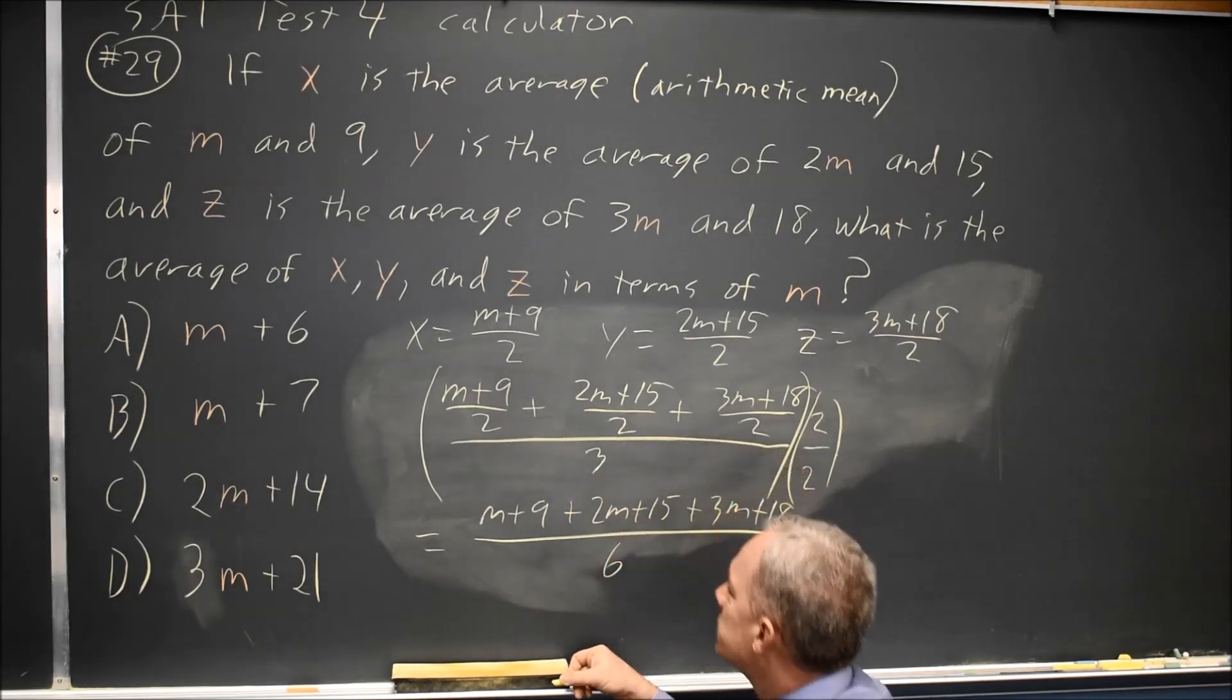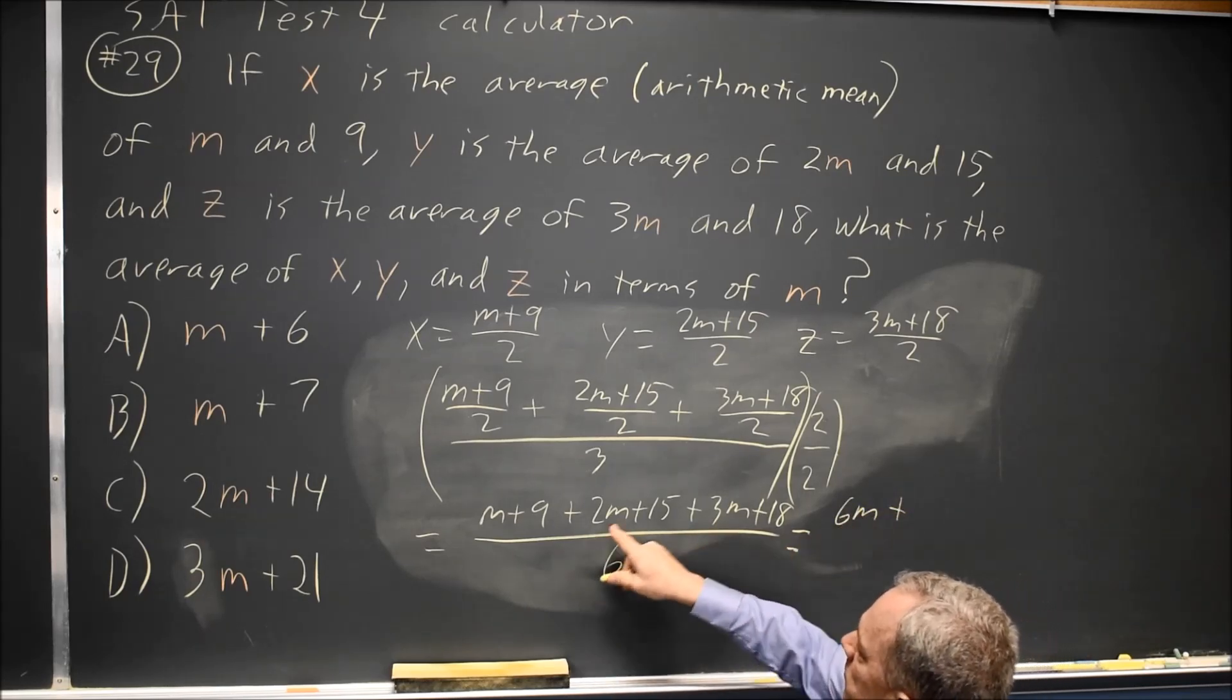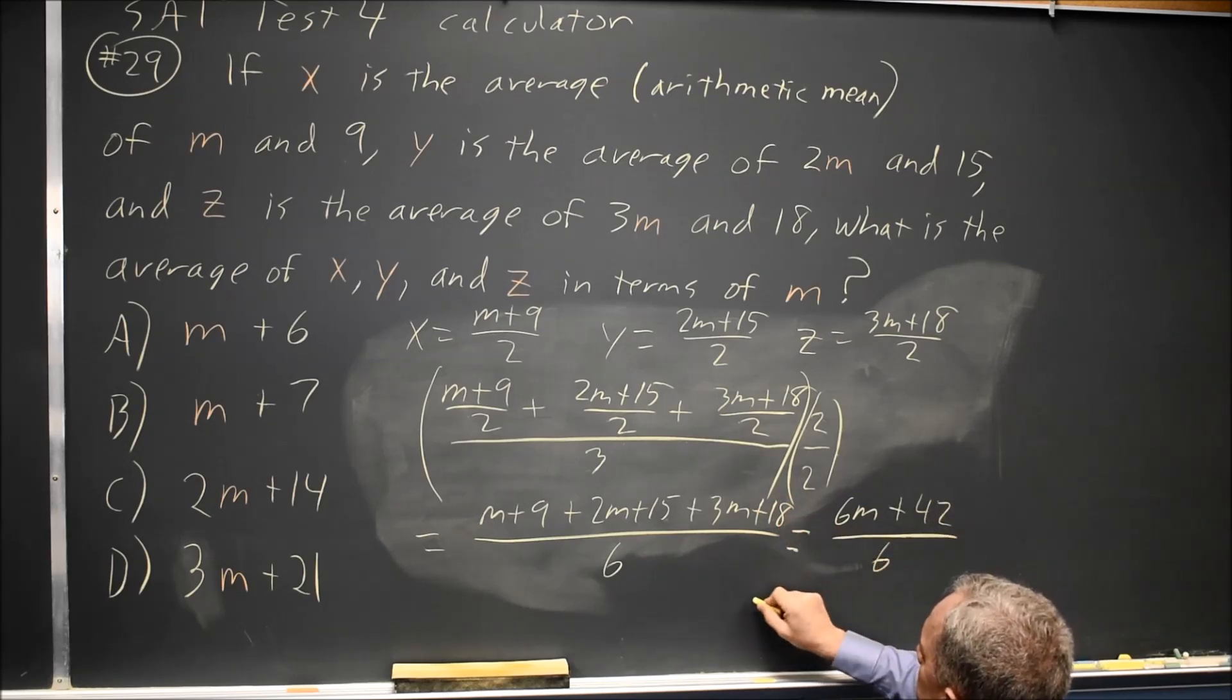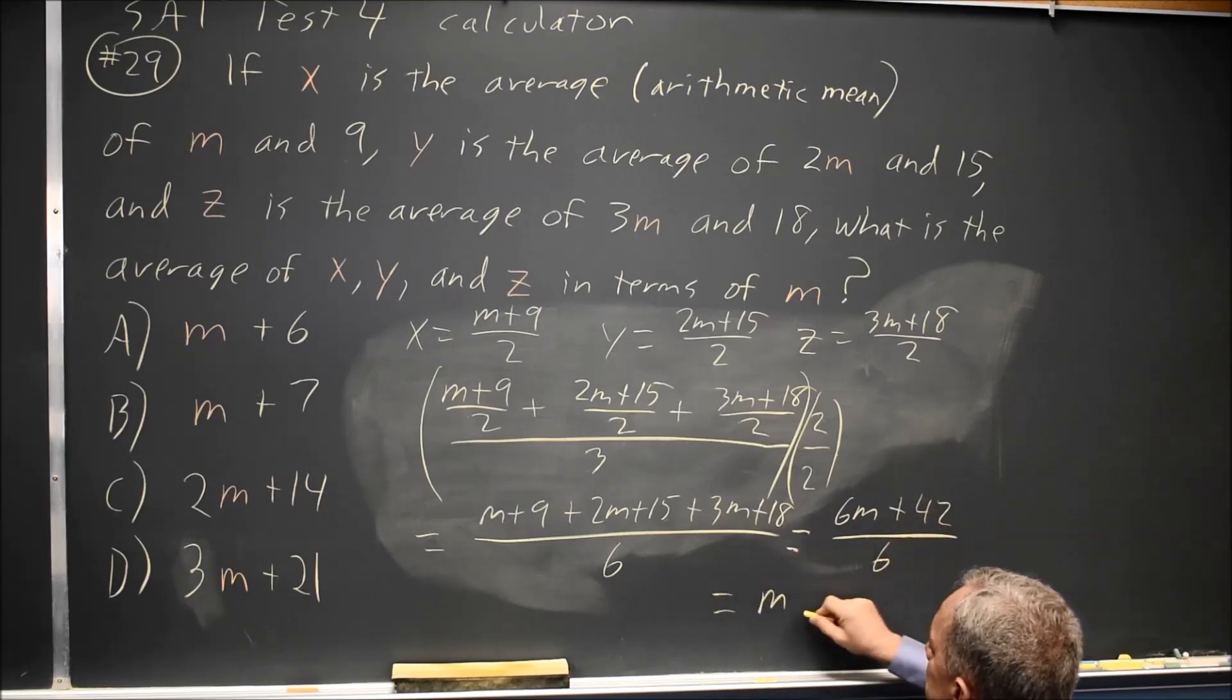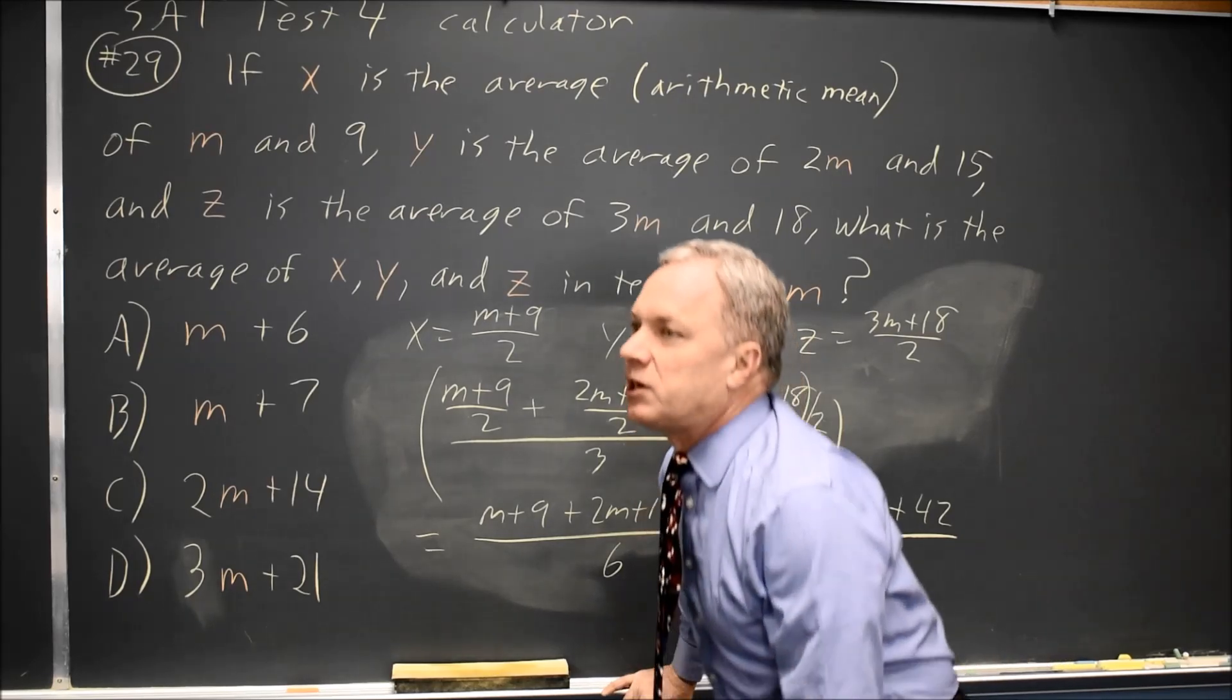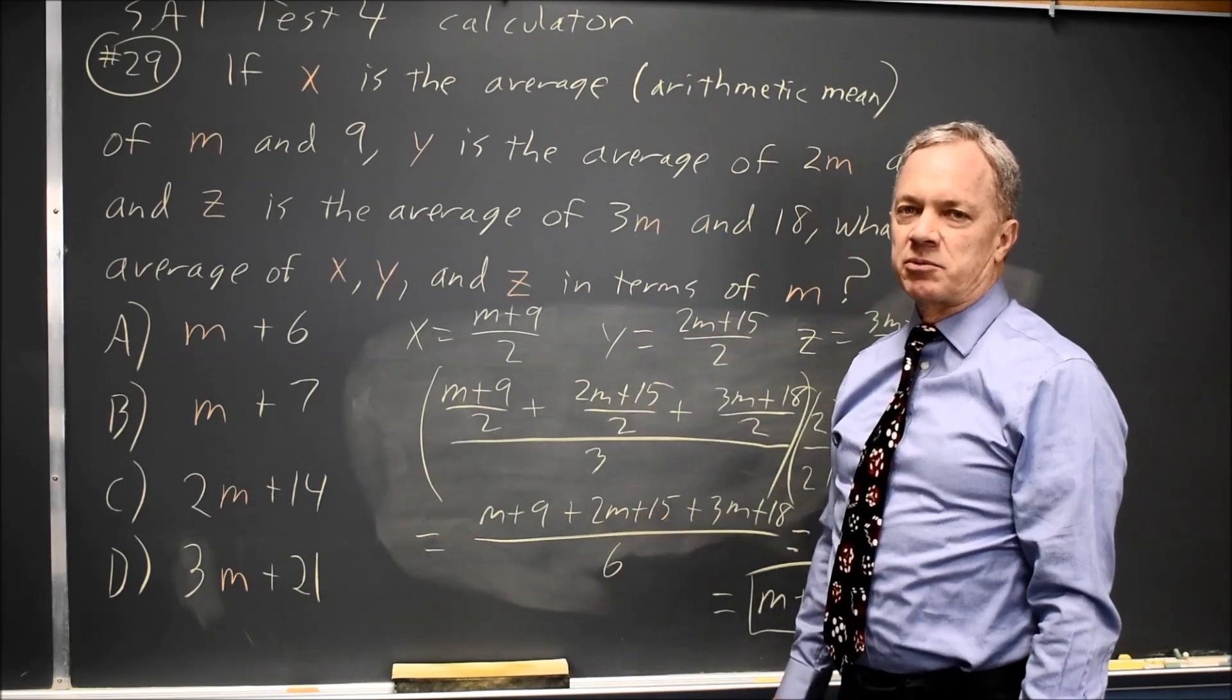That's M plus 2M plus 3M, which is 6M. 9 plus 15 is 24, plus 18 is 42, all over 6. 6M over 6 is M. 42 over 6 is 7. I still get M plus 7. I think it's easier if I make up a value M equals 0 and turn this into arithmetic rather than slightly ugly algebra.